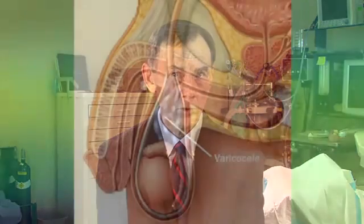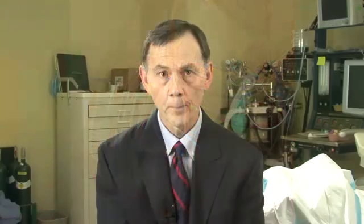Temperature also plays a critical role. Sperm can only mature at temperatures lower than the core body temperature. This is why the testes normally lie in the scrotal sacs outside of the body. Heat exposure or conditions where the testes have not descended into the scrotum can affect sperm production.